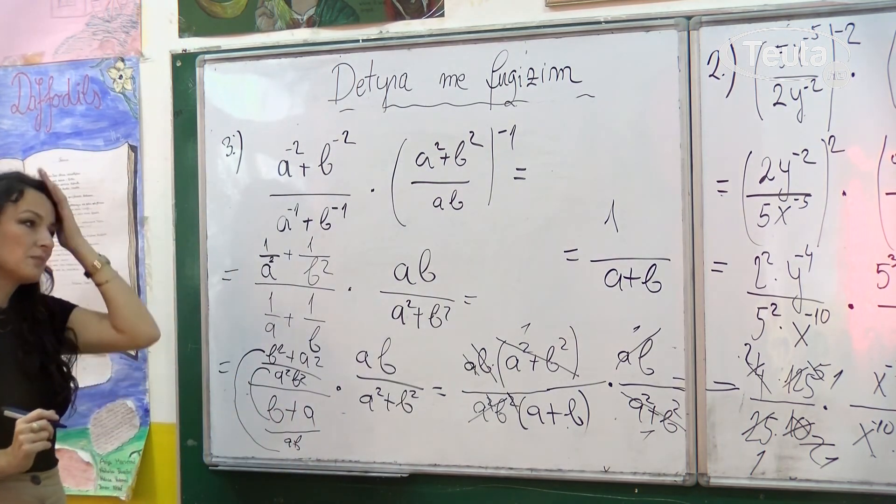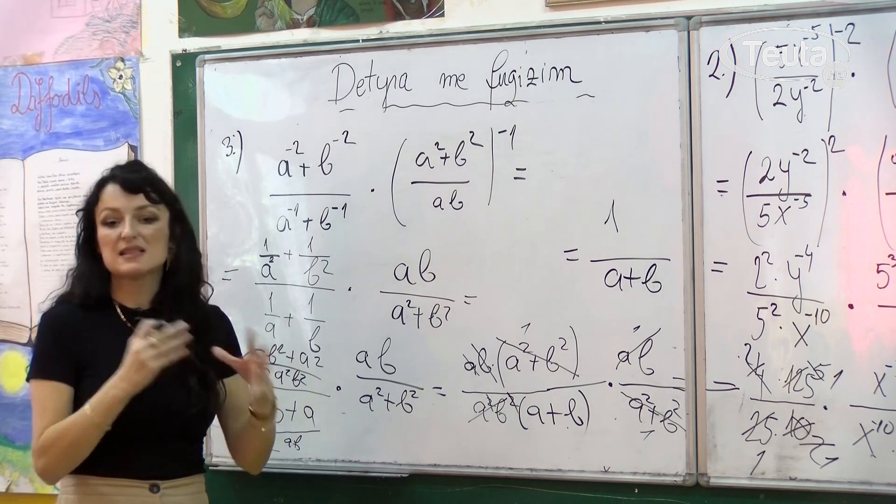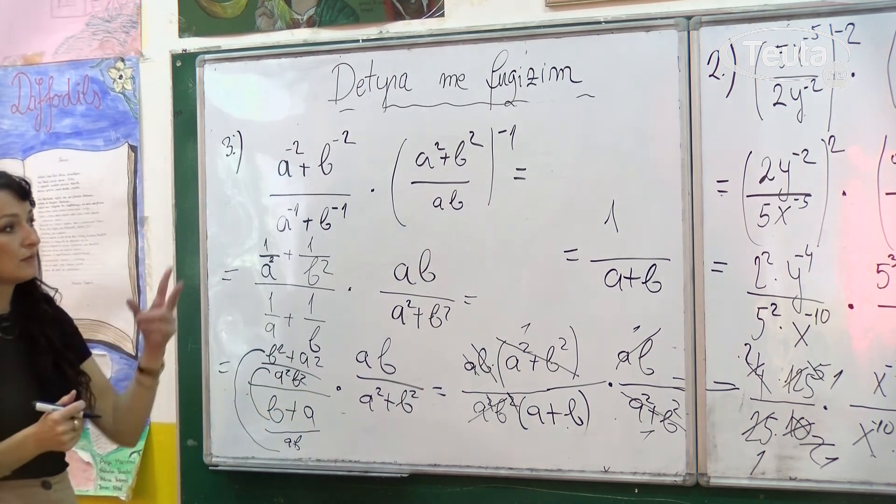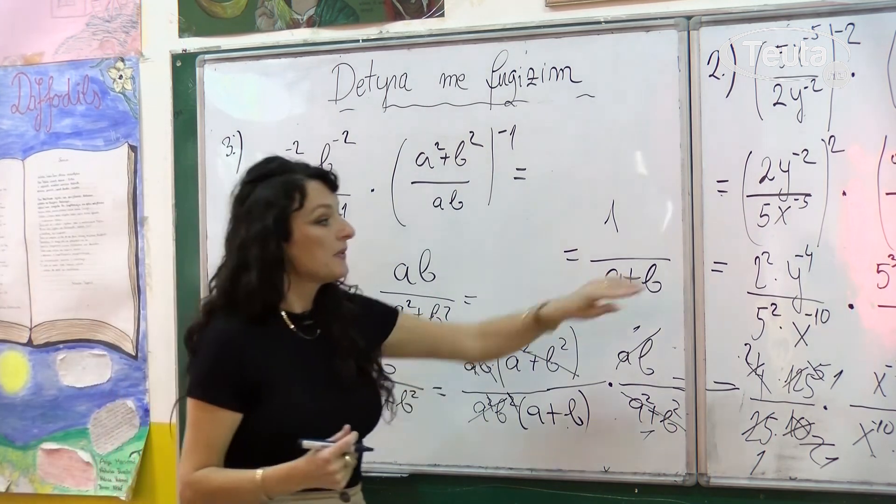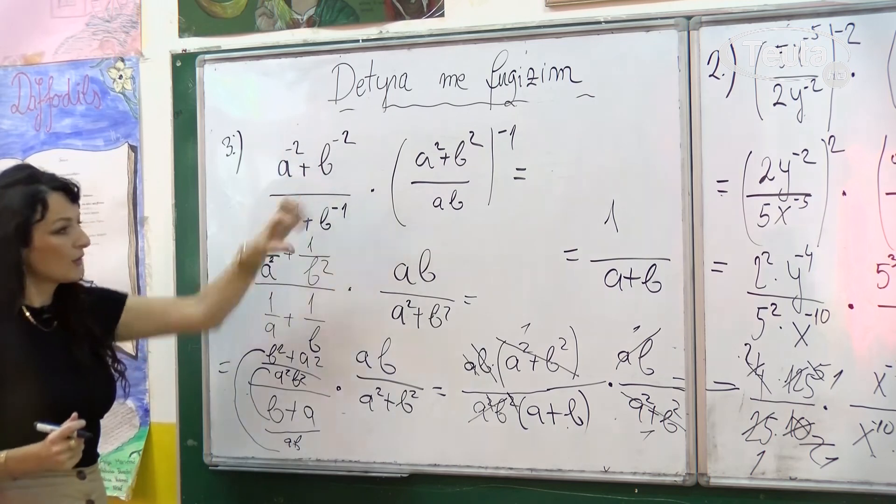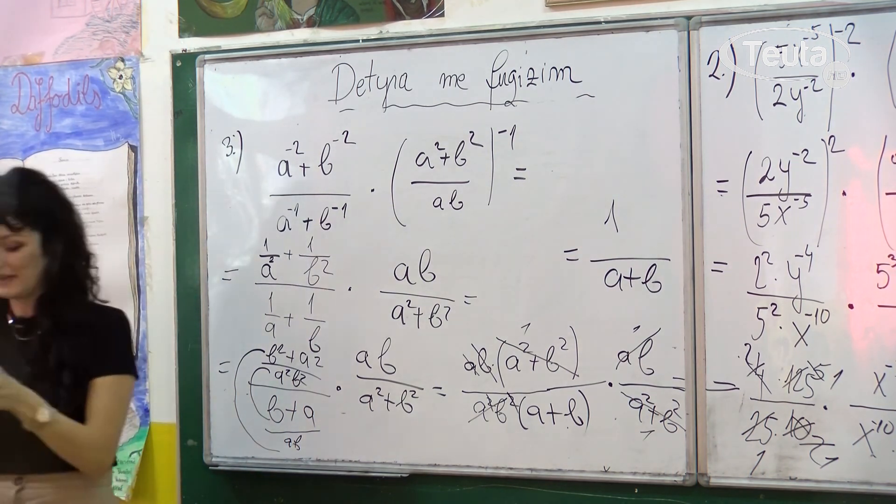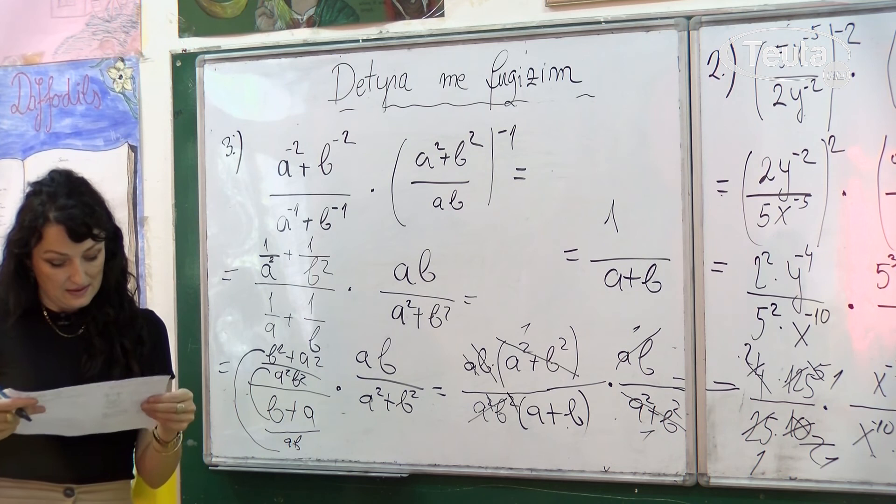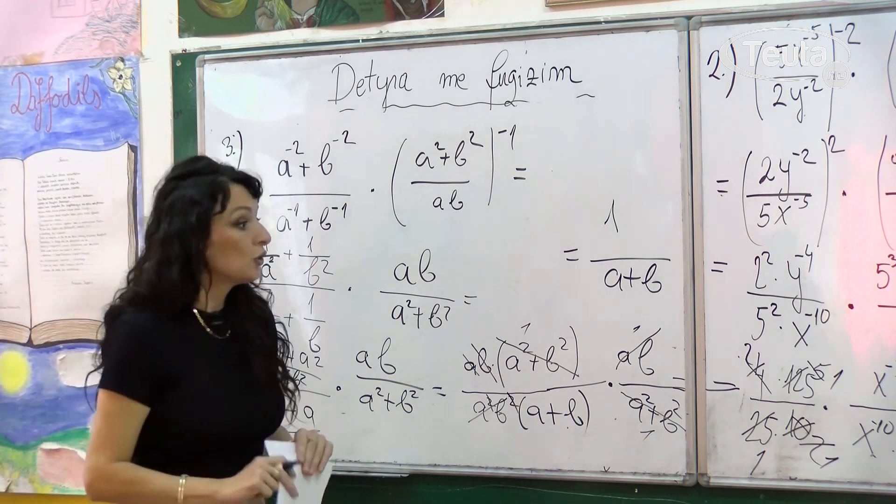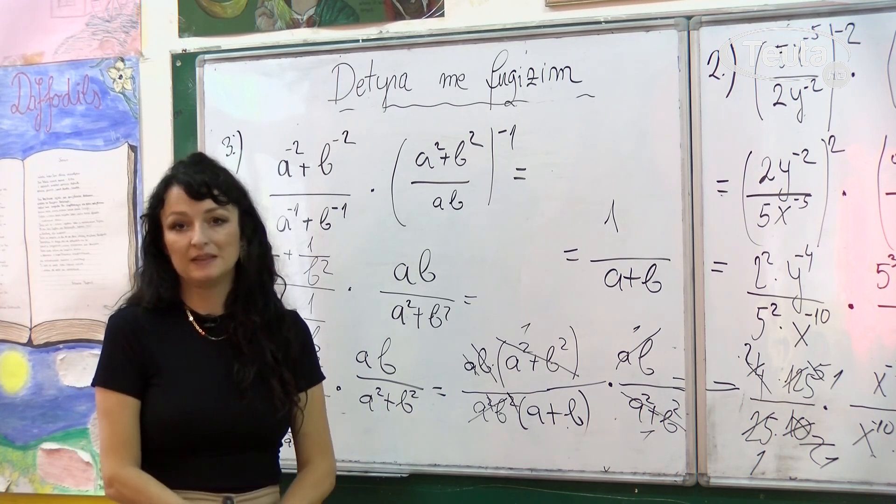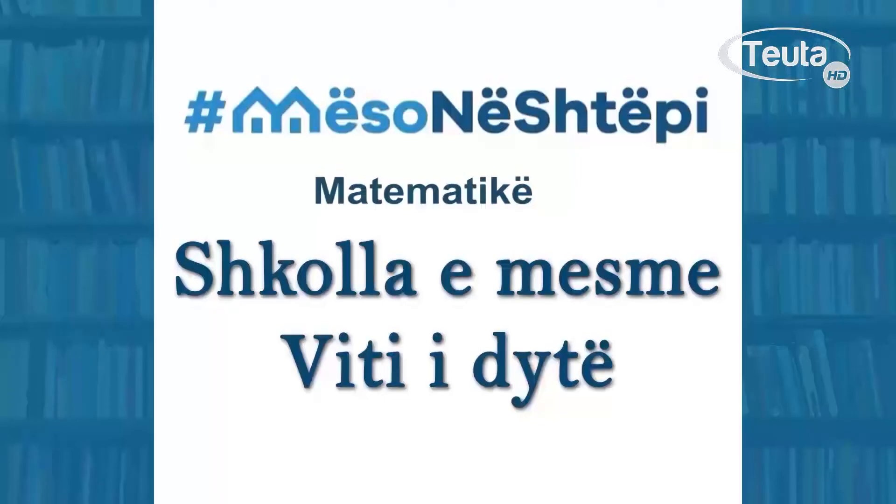Pra shihni që detyrat me fuqi dhe fuqizim kemi mundur t'i ndajmë në disa tipe. Tipi i parë i detyrave kanë qenë detyrat numerike, të dytët janë thyesat algebrike, po themi tipi më i lehtë, kurse në tipin e tretë janë thyesat algebrike më të komplikuara. Ju për ushtrim mund të merrni detyrat në faqen e librit 13 dhe 14 dhe të ushtroni, sepse këto detyra vërtet nevojiten të ushtroni. Faleminderit për vëmendjen, mirë paçit.